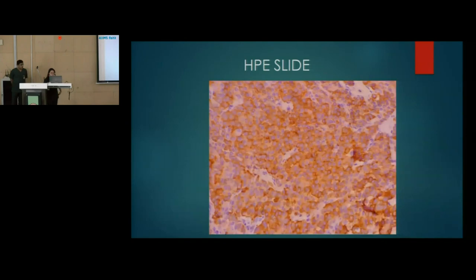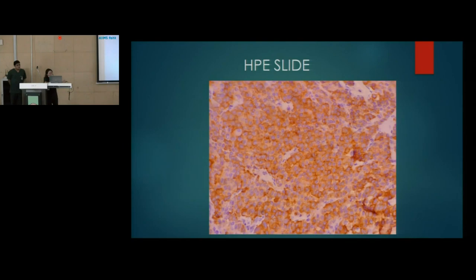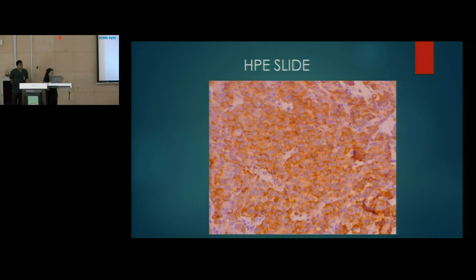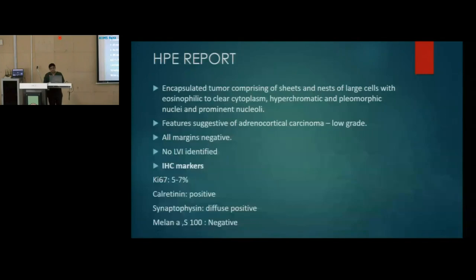Immunohistochemistry was done. Synaptophysin showed diffuse cytoplasmic staining. Chromogranin was negative, which rules out pheochromocytoma, as chromogranin is negative in cortical tumors. Calretinin was diffusely nuclear and cytoplasmic positive. SF-1 and Melan-A (100) were also negative, further ruling out pheochromocytoma. Overall, based on histomorphological and IHC findings, the conclusion is low-grade adrenocortical carcinoma.